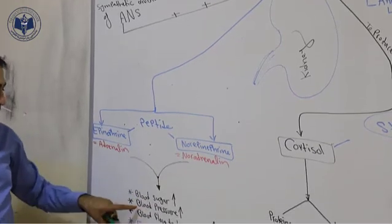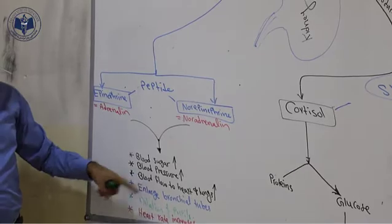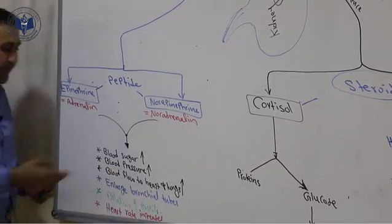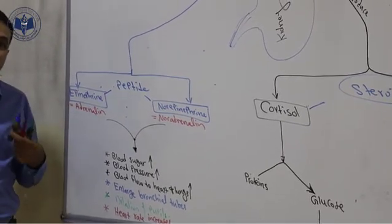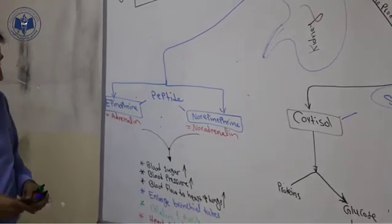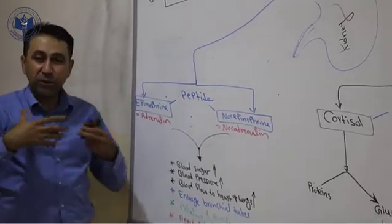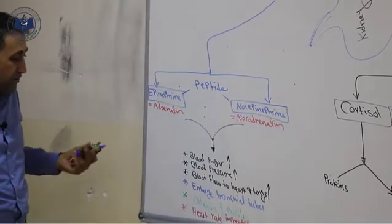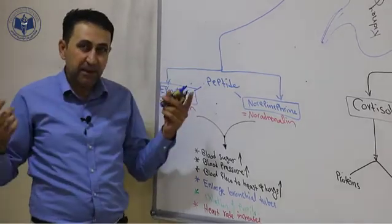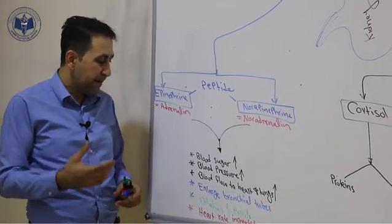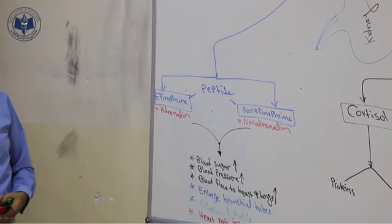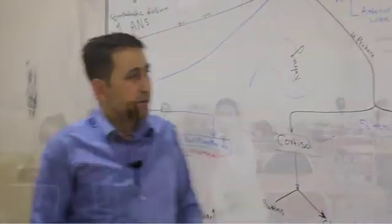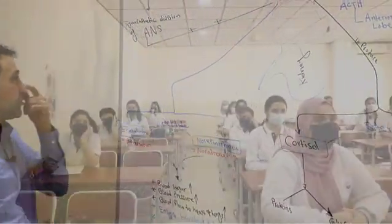Epinephrine and norepinephrine have several effects on the body: they increase blood pressure, increase blood sugar, increase blood flow to the heart and thereby increase heart rate, increase blood flow to the lungs increasing respiration rate, enlarge bronchial tubes to allow more air into the lungs for more oxygen, and dilate the pupils of the eyes by acting on the iris muscles.